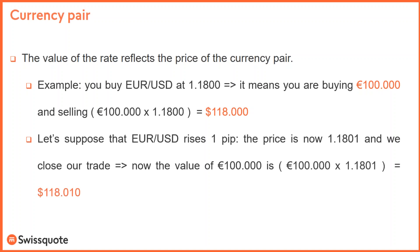Now let's look at a price movement. The price is moving 24 hours a day. Let's suppose euro/dollar rises 1 pip, so the price will be 1.1801. We close our trade, meaning we made a profit of 1 pip. As in our example, we were trading 100,000 euros.